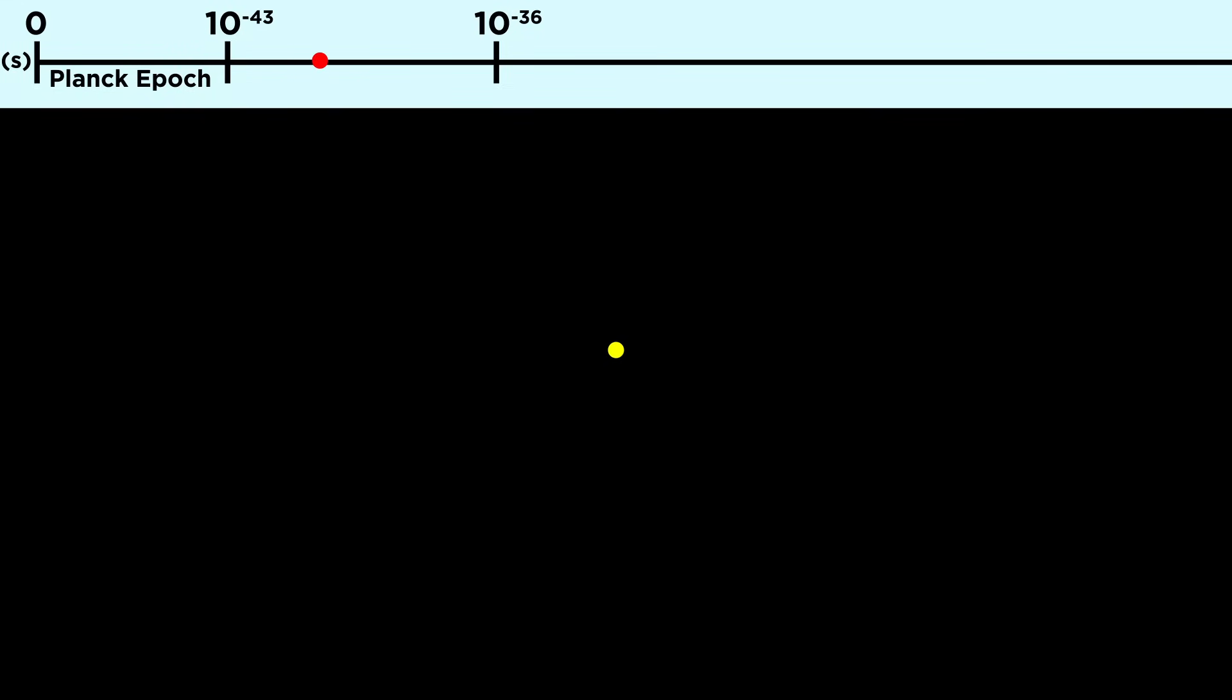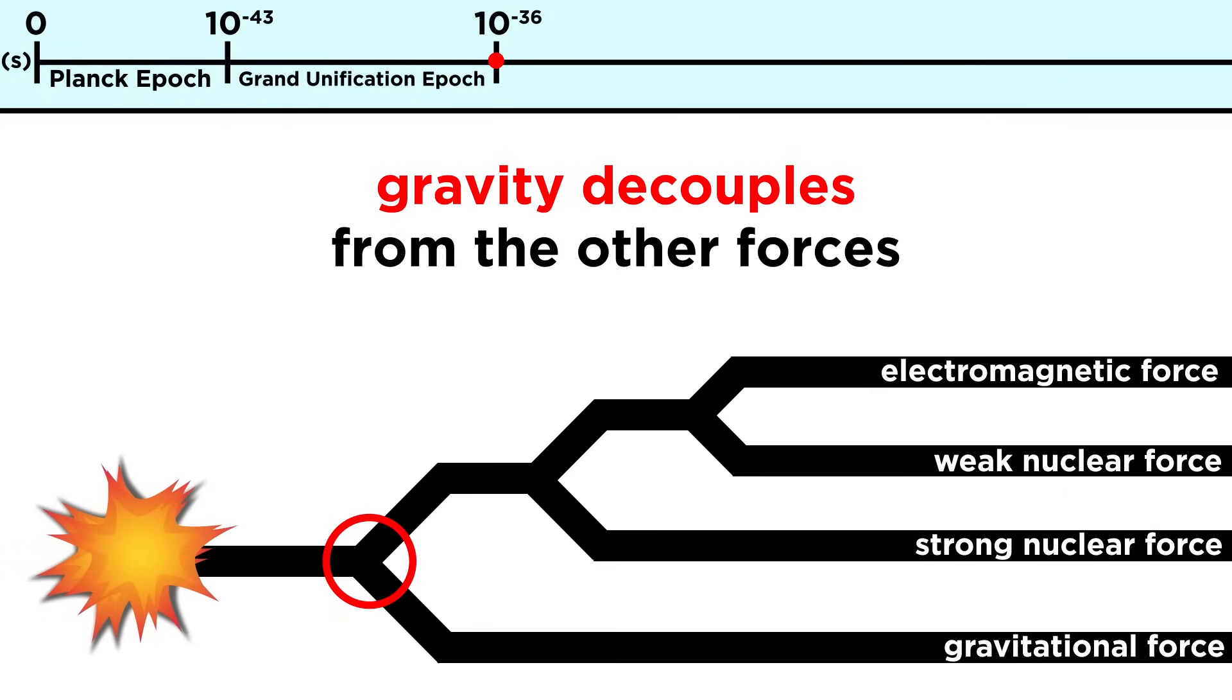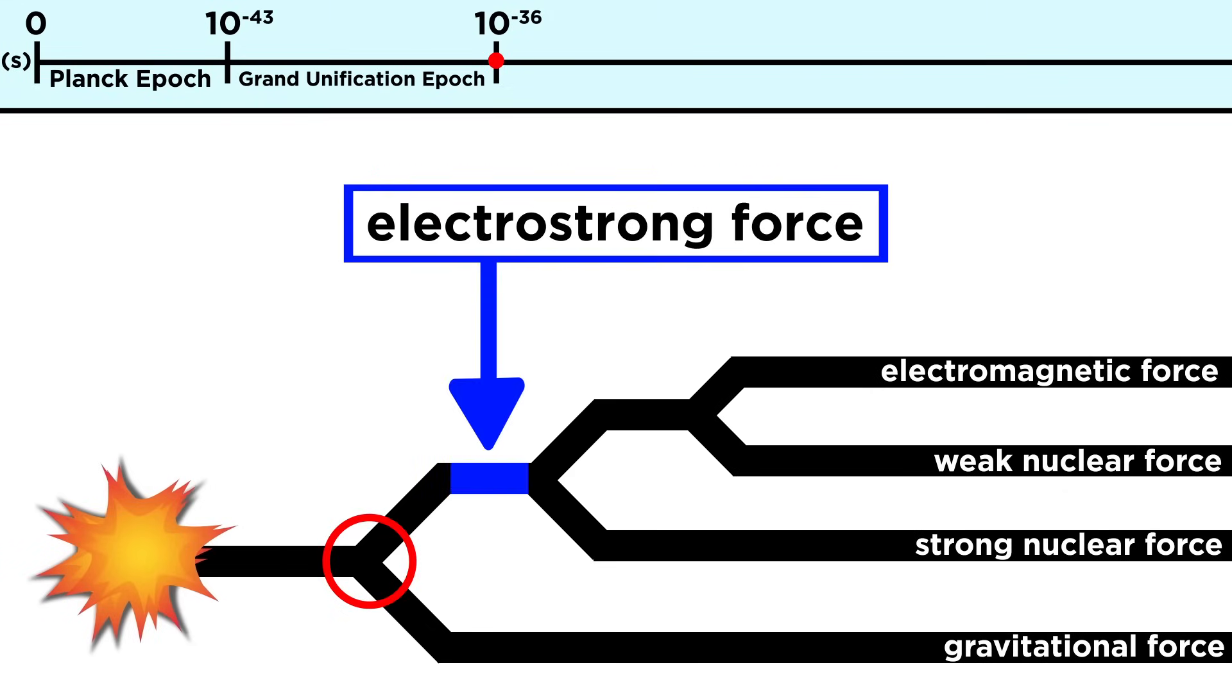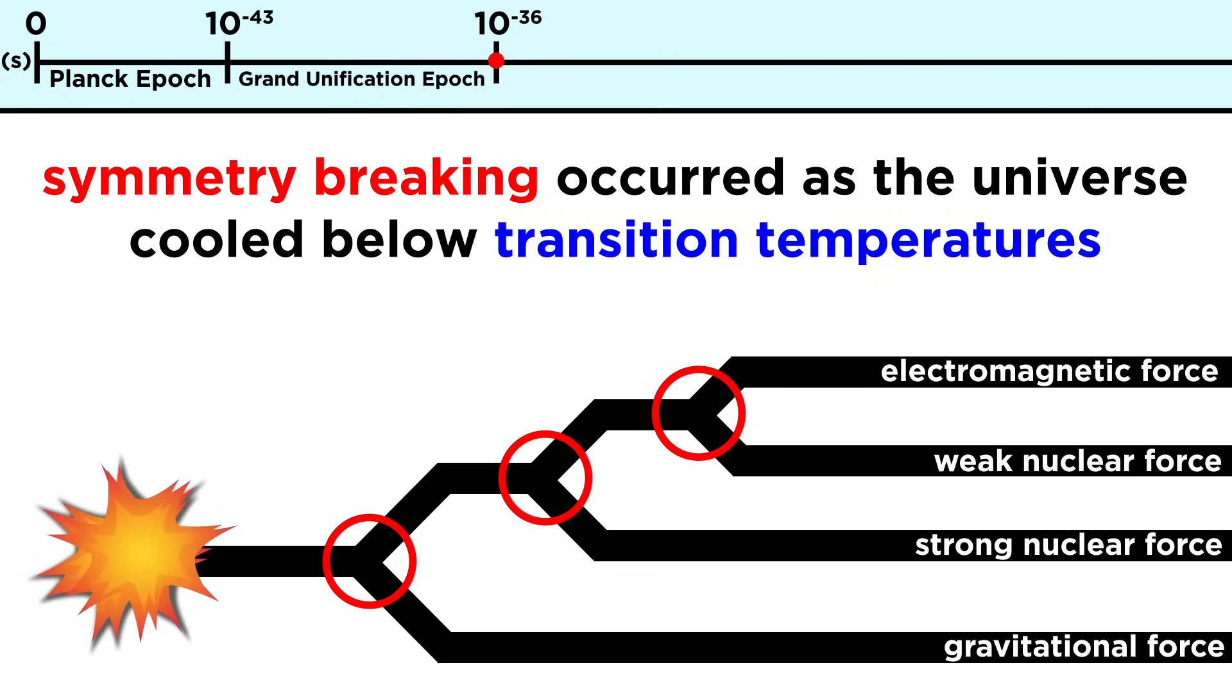But in the next epoch, from 10^-43 seconds until 10^-36 seconds, also called the grand unification epoch, temperatures cooled down to 10^29 Kelvin. This allowed for gravity to decouple from the other three forces, which can be collectively referred to as the electrostrong force, and which we believe could potentially be described by a grand unified theory. This act of forces breaking off from other forces is the result of symmetry breaking, a phenomenon that can occur when extreme temperatures cool below certain transition temperatures. In this way, we can understand that all the disparate fundamental particles in the universe were once part of the same thing, that only manifested as different objects as a result of a series of successive symmetry breakings while the universe cooled.